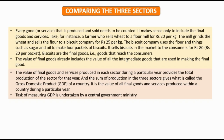Now let's compare the three sectors and understand GDP — Gross Domestic Product. Every good or service that is produced and sold needs to be counted. It makes sense to include only final goods and services. For example, a farmer sells wheat to a flour mill for ₹20 per kg; the mill grinds it and sells flour to a biscuit company for ₹25 per kg; the biscuit company sells four packets of biscuits to consumers for ₹80, which is ₹20 per packet. Biscuits are the final goods.